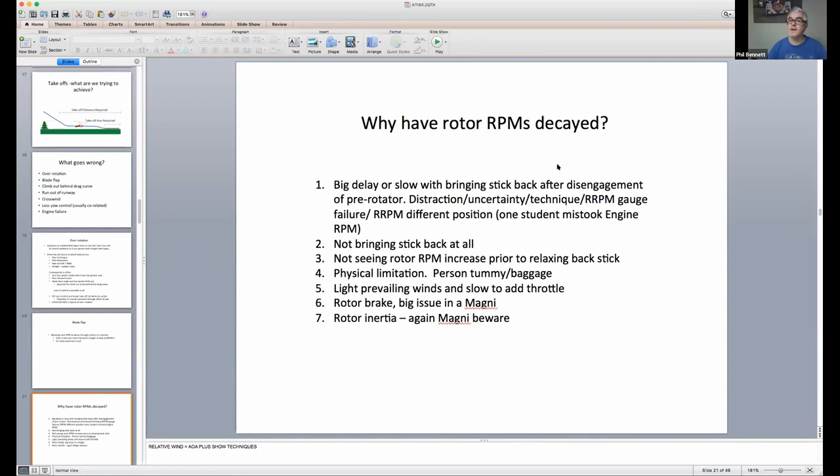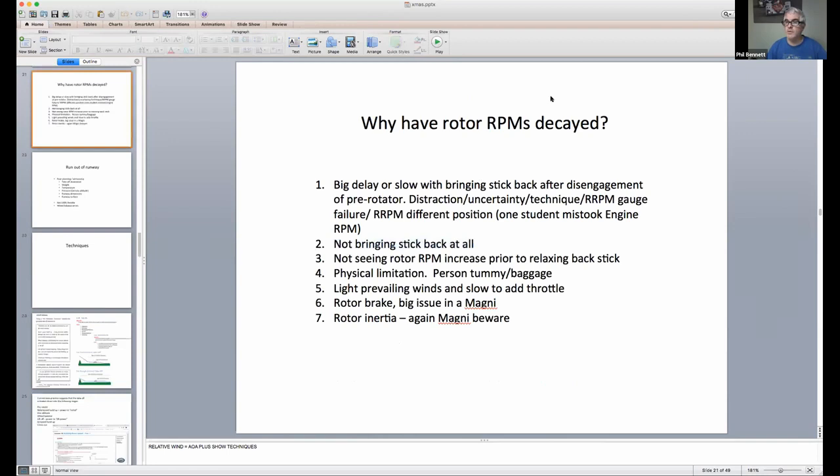So, why have the rotor RPMs decayed? Well, firstly, it's either a big delay or very slow bringing the stick back after you've released the pre-rotator and that's early pilot nerves and not really thinking about what they're doing accurately, so they're a bit hesitant or they're searching in the cockpit for the rotor RPM gauge. Again, it goes back to differences training. You look at where's the rotor RPM gauge on this one? Well, I can tell you it's there, but where's the rotor RPM gauge on this one? It's actually there, but being there isn't being there.